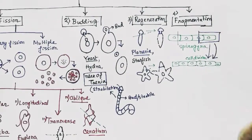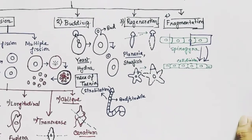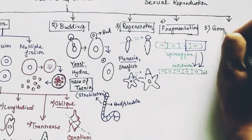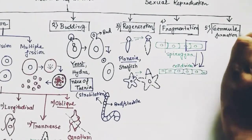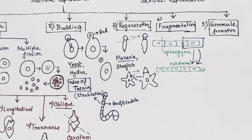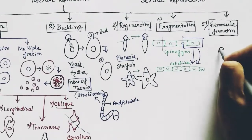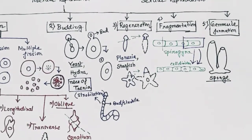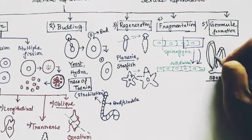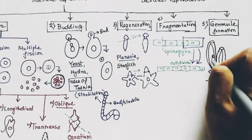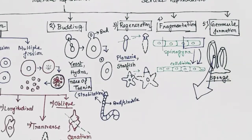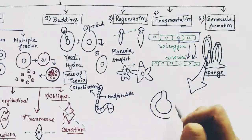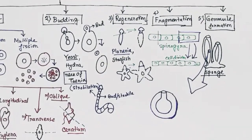The fifth type of asexual reproduction is gemmule formation. Gemmule formation is found in sponges, especially freshwater sponges. The sponge can reproduce through both sexual and asexual reproduction methods. In the asexual method, the sponge grows an internal bud called the gemmule. The gemmule is the asexual unit of reproduction in these sponges.